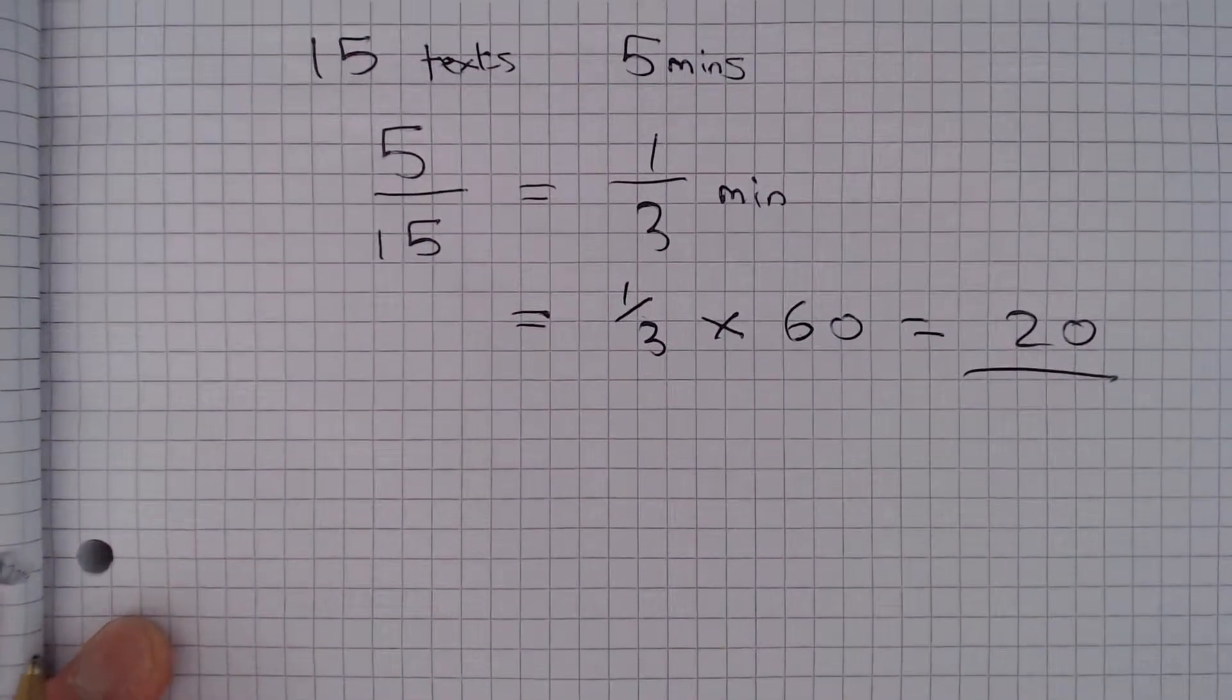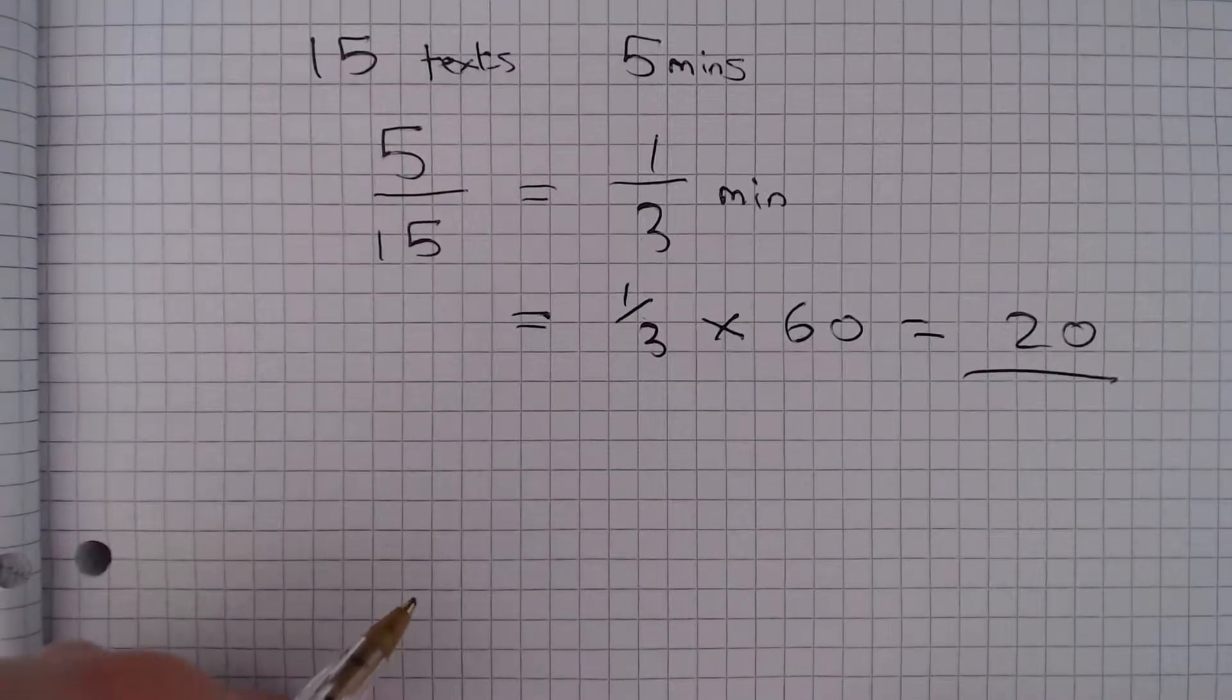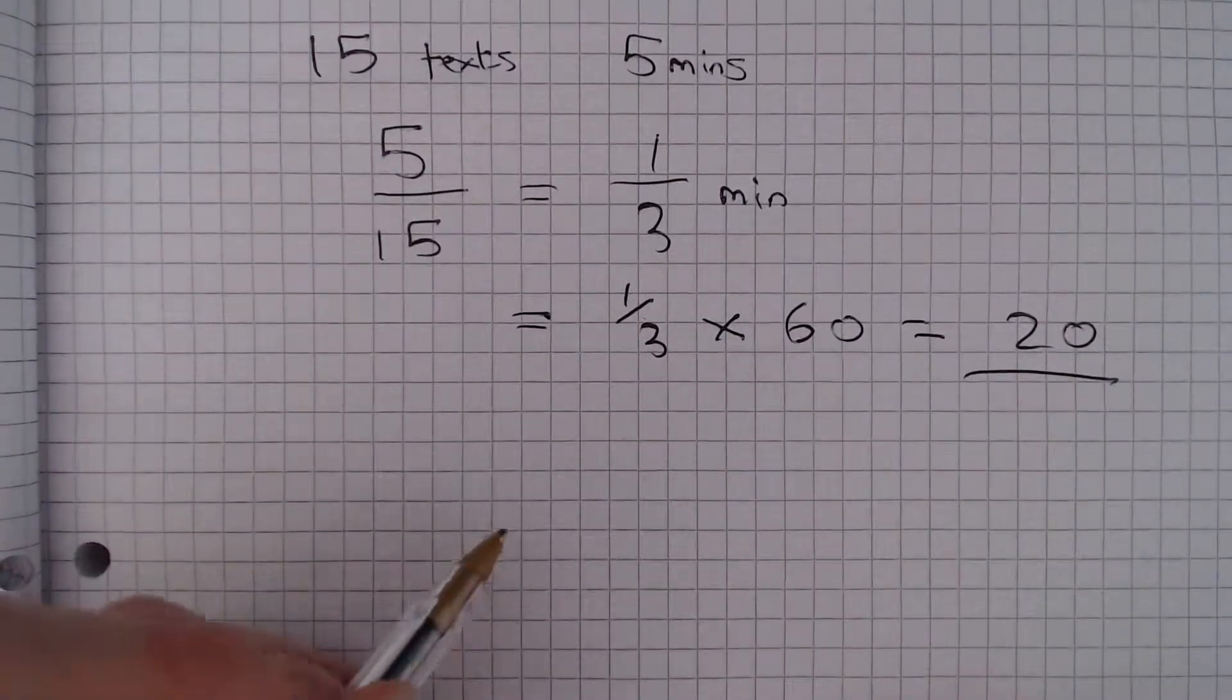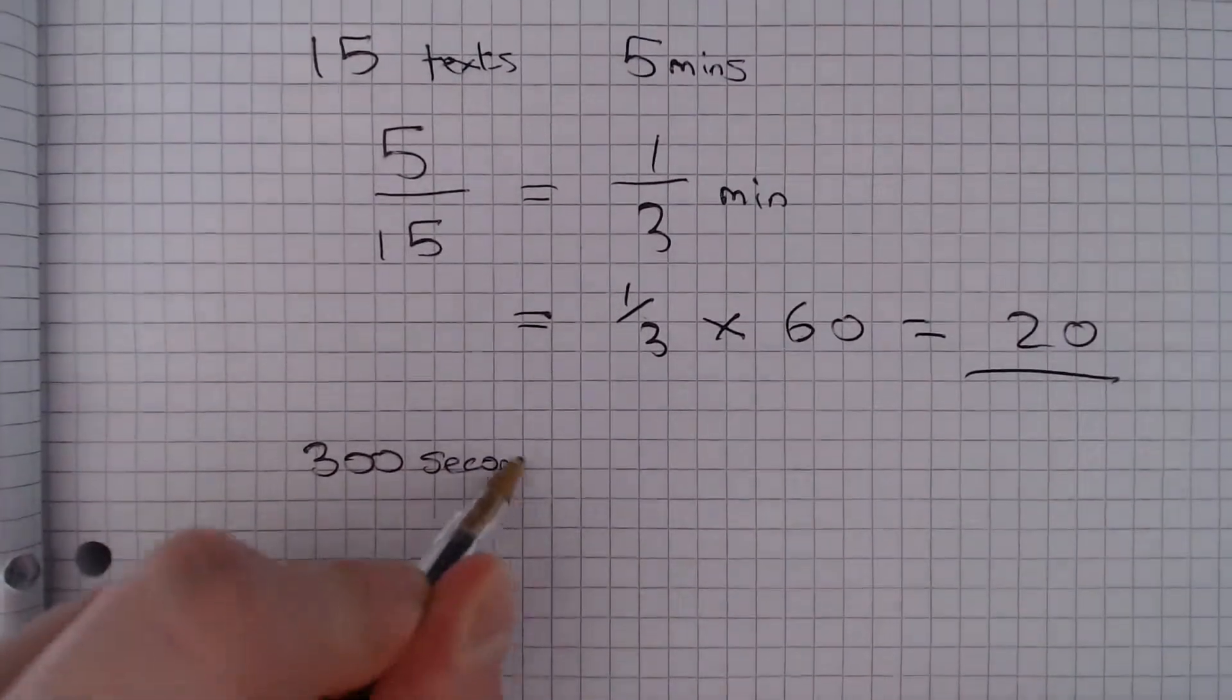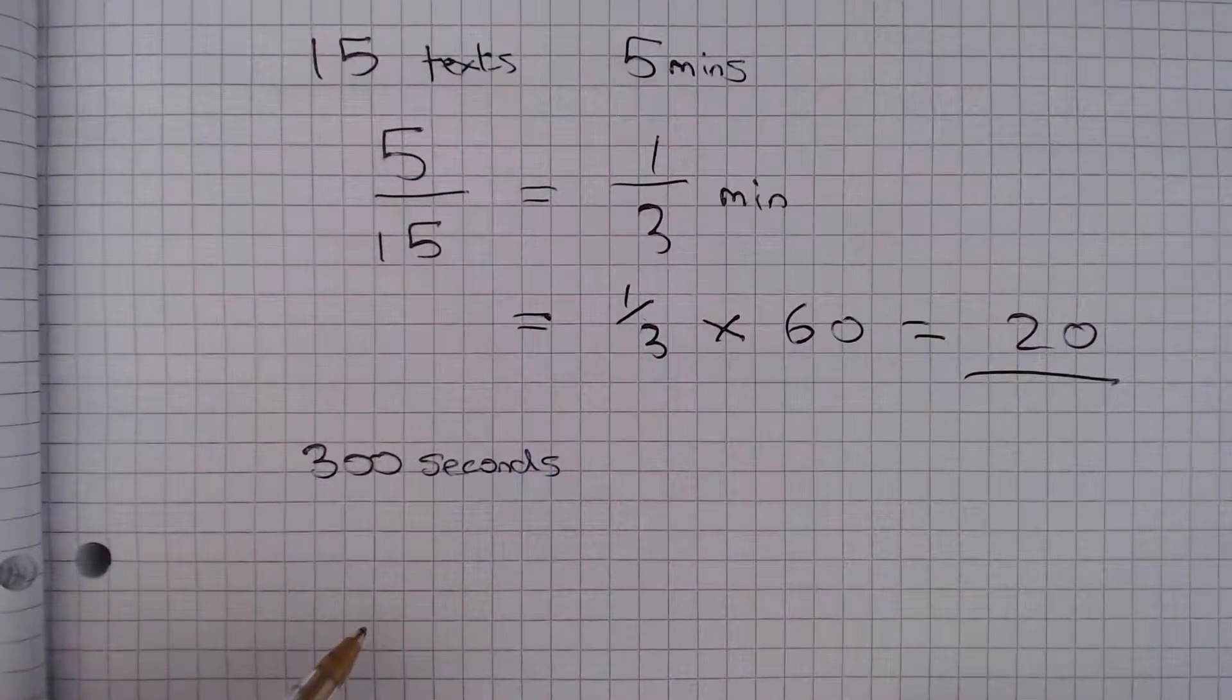Now the other way we could do this is we could actually work out the number of seconds straight away. So we could say 5 minutes is exactly 300 seconds, and that is just 5 multiplied by 60.